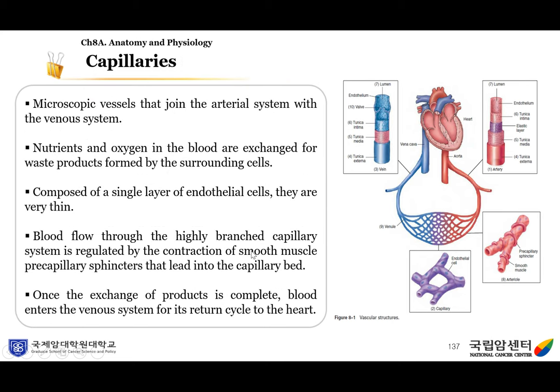Capillaries are microscopic vessels that join the arterial system with the venous system. Nutrients and oxygen in the blood are exchanged for waste products formed by surrounding cells. Capillaries are composed of a single layer of endothelial cells — they are very thin. Blood flow through the highly branched capillary system is regulated by the contraction of smooth muscle precapillary sphincters that lead into the capillary bed. Once the exchange of products is complete, blood enters the venous system for its return cycle to the heart.